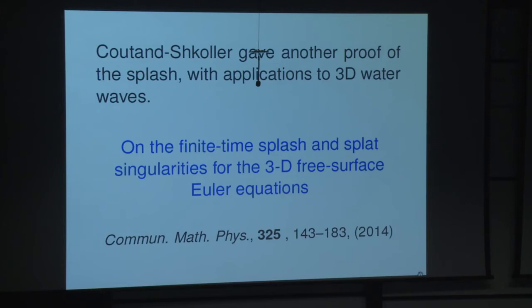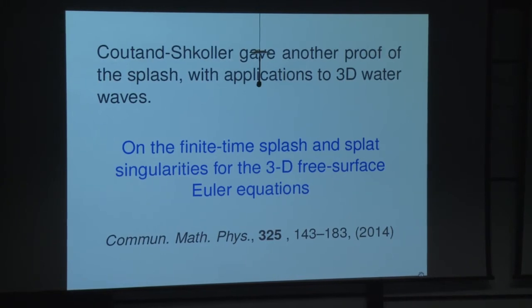Let me come back to three dimensions and mention an important paper of Coutand and Shkoller, which shows that this phenomenon is not restricted to two dimensions: there is a three-dimensional splash. One can trivially take the Cartesian product of the 2D splash with one extra dimension, but this paper shows that two waves can intersect at a single point — a genuinely three-dimensional phenomenon.